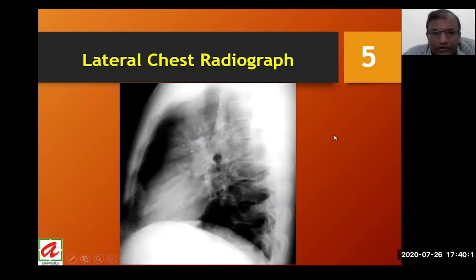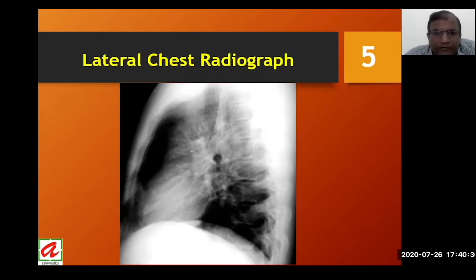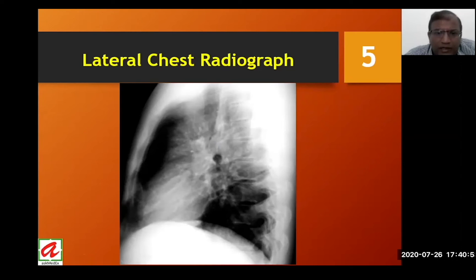We are used to seeing PA radiographs, but nowadays lateral radiographs are uncommonly requested. However, the lateral view can often solve a diagnostic problem instead of requiring a CT thorax, which has limitations of availability at peripheral places and limited expertise. Whenever we see an opacity on the right side on a PA view, we should get a right lateral view; similarly, a lesion on the left side warrants a left lateral view, as the affected side touching the plate provides greater clarity.